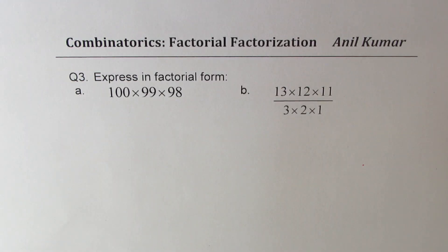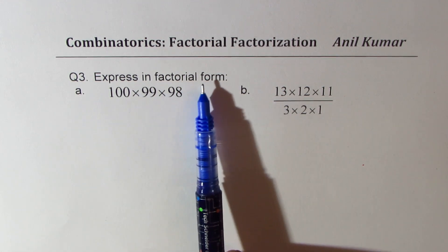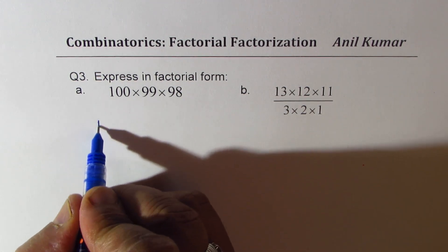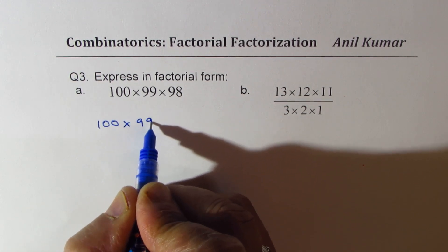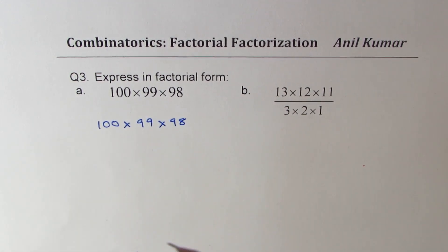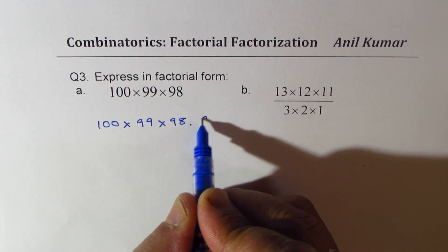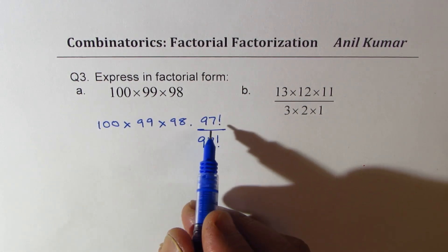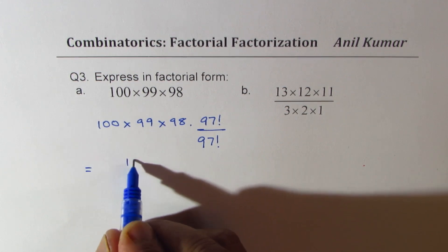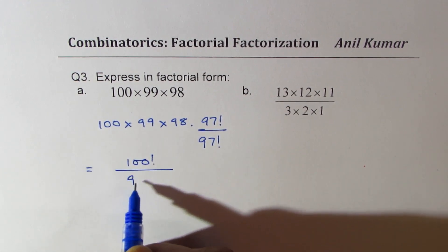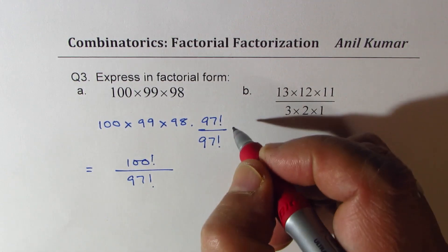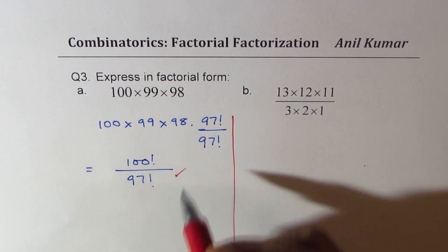Here is our last question — we're doing the reverse: expressing given expressions in factorial form. We have 100 times 99 times 98. To write this in factorial notation, multiply and divide by 97 factorial. The numerator becomes 100 factorial and the denominator is 97 factorial. So the answer is 100 factorial divided by 97 factorial.